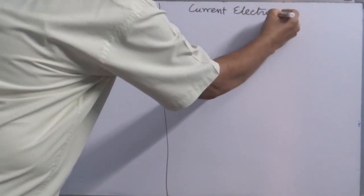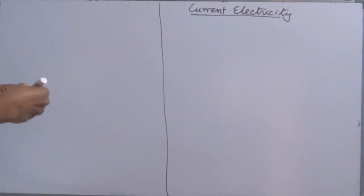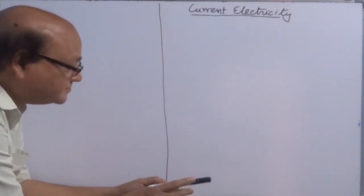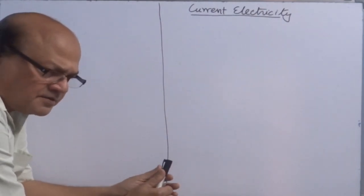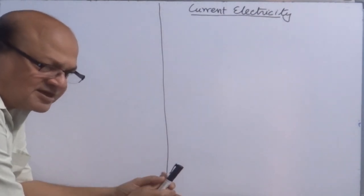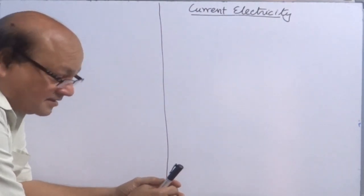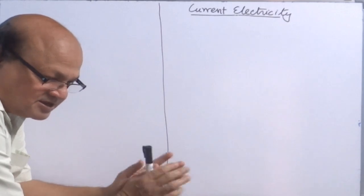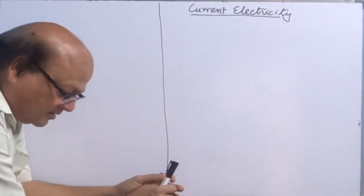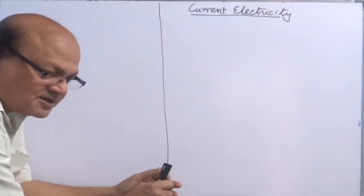Current Electricity. What is current and when does current flow through a conductor? If you take a normal copper wire lying on a table and touch this copper wire, you will not find any kind of current. But once you connect it to an EMF source — a potential difference source — current flows through it. Why does current flow through a conductor when it is connected across two points having potential difference?